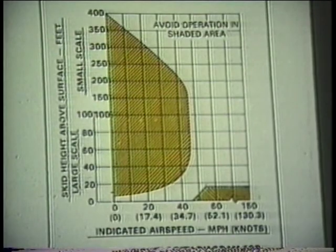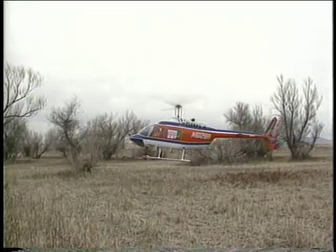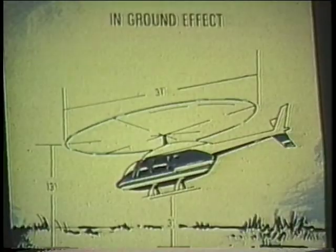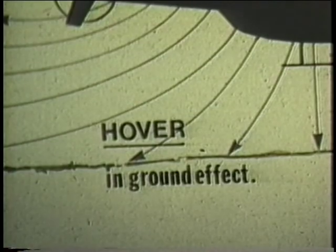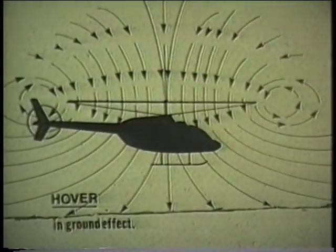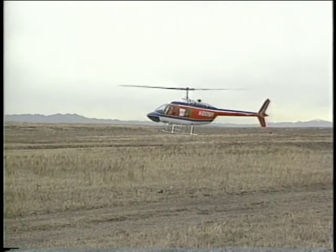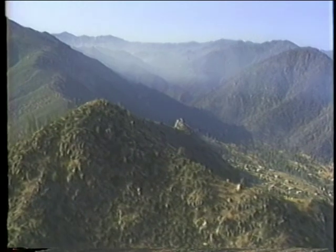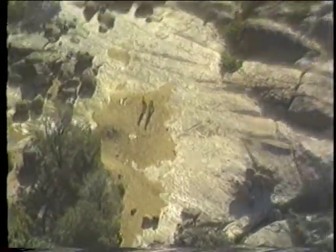Now let's talk about helicopter performance. A condition called ground effect generally improves the capabilities of helicopters. Simply put, when a helicopter is within one half rotor diameter from the ground, it is called hovering in ground effect, HIGE. A cushion of air has been created between the ground and the helicopter, increasing lift and reducing power requirements, providing the surface is relatively smooth and level. Rough terrain, ridge tops, or pinnacles may reduce or even eliminate the advantages of ground effect.